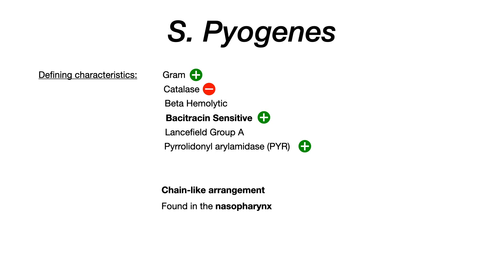This is Lancefield Group A — sometimes written shorthand as Group A Strep or GAS. If you're a third or fourth year medical student on the wards and you see 'GAS' in a note, that's Group A Strep referring to Strep pyogenes. It's also PYR (pyrolidonyl arolamididase) positive. For USMLE or COMLEX purposes, just know that if you see Group A or PYR positive, it refers to Strep pyogenes.